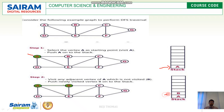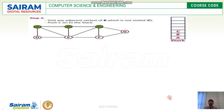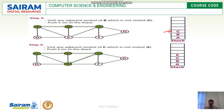Next, visit any adjacent vertex of B which is not visited. We started from A, came to B, and for B we find one adjacent vertex which is C. Push C into the stack — the stack now has three elements: A, B, and C. Then visit any adjacent vertex of C which is not visited. We take E as the unvisited vertex from C and push it onto the stack. You can see the stack now has four elements.